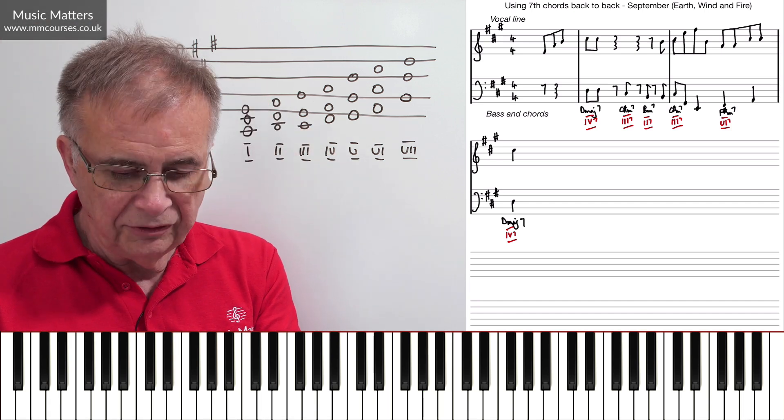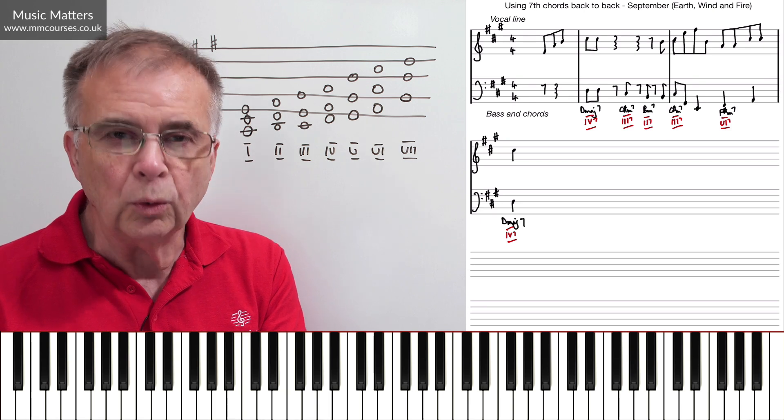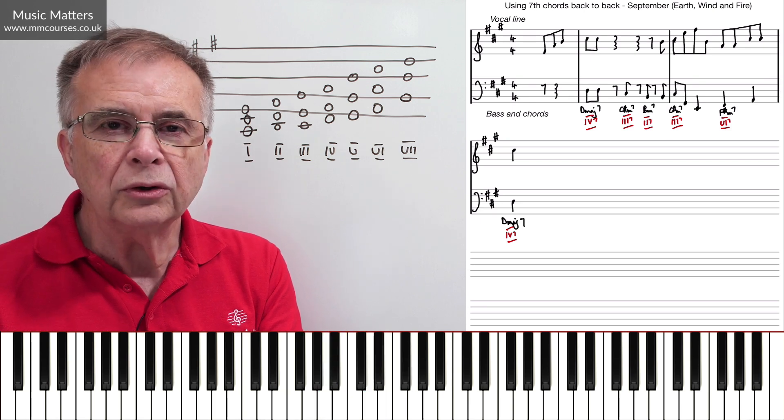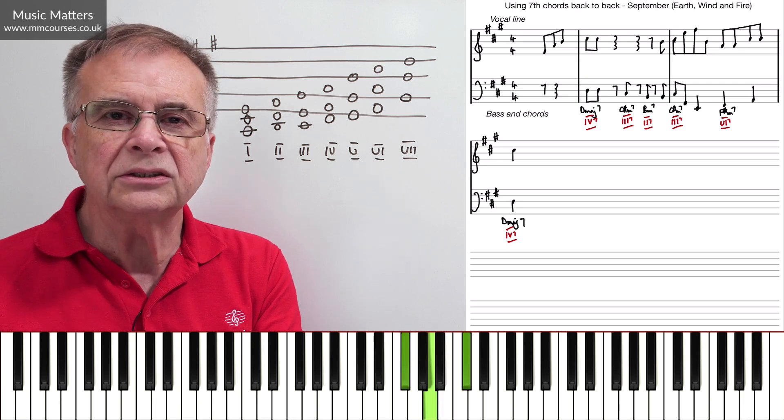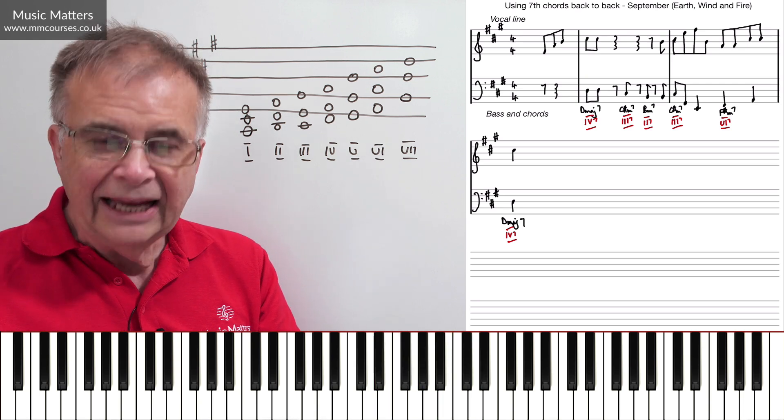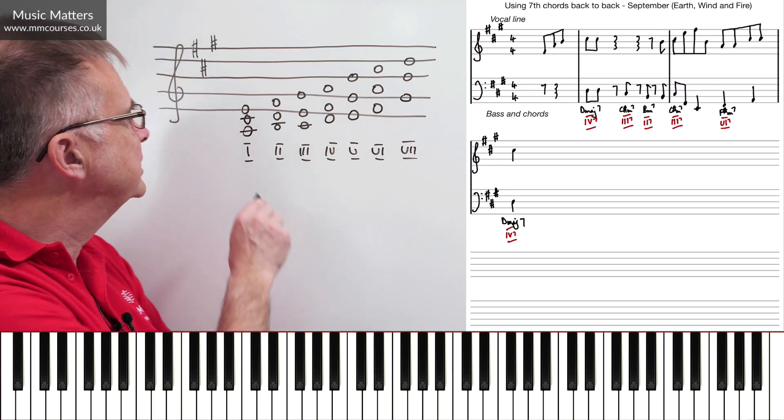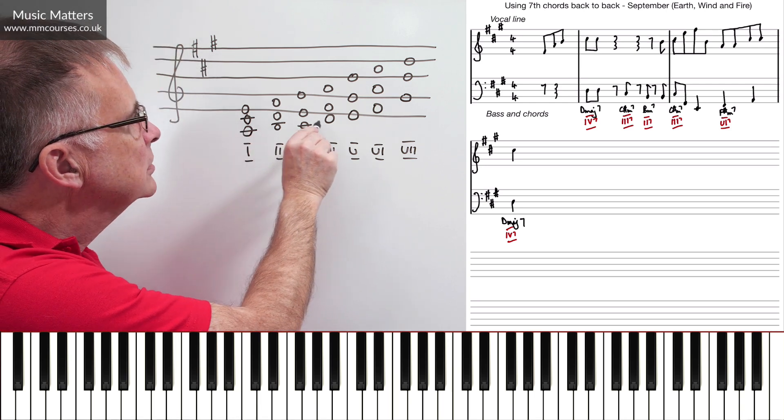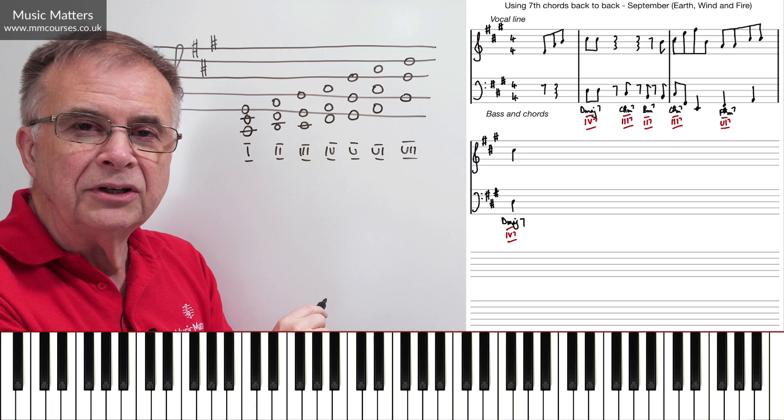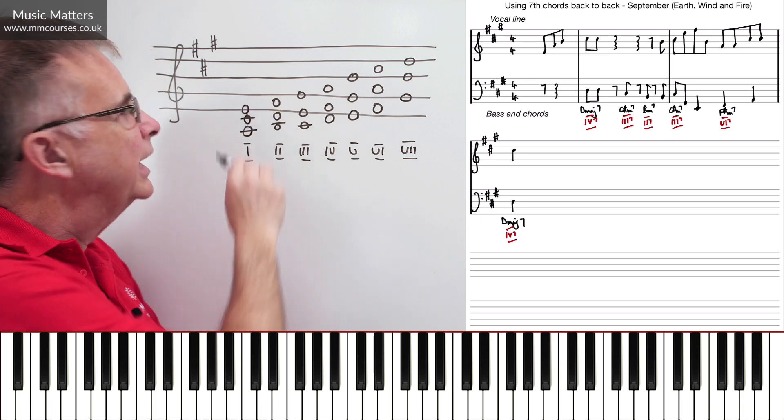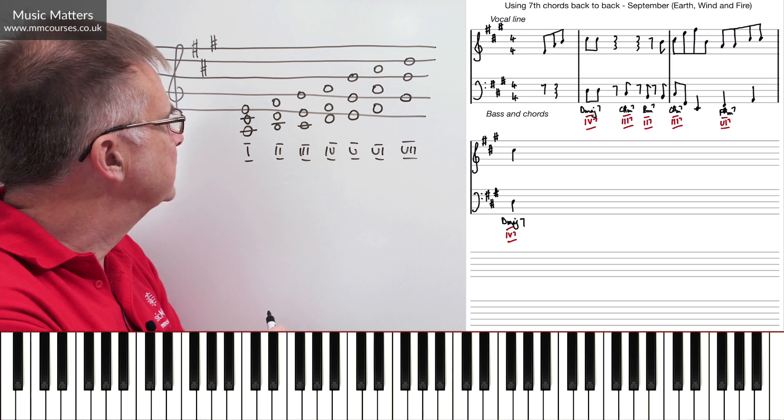And I've just put the third and the fifth above each of those notes. So here's chord I, chord II, chord III, chord IV, chord V, chord VI, chord VII. And to get those triads, all we've done is used a root note, which is each successive note of the scale. We've added a third and a fifth above each of those notes.